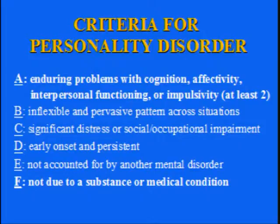You can see the overlap between these criteria in a substance use disorder: enduring problems with cognition, affectivity, interpersonal function, and impulsivity. Most personality disorders we're not going to talk about today have impairment in a couple of those. Patients with borderline personality disorder typically have impairment in all four, and patients with severe substance use problems also have problems in all four of those areas.